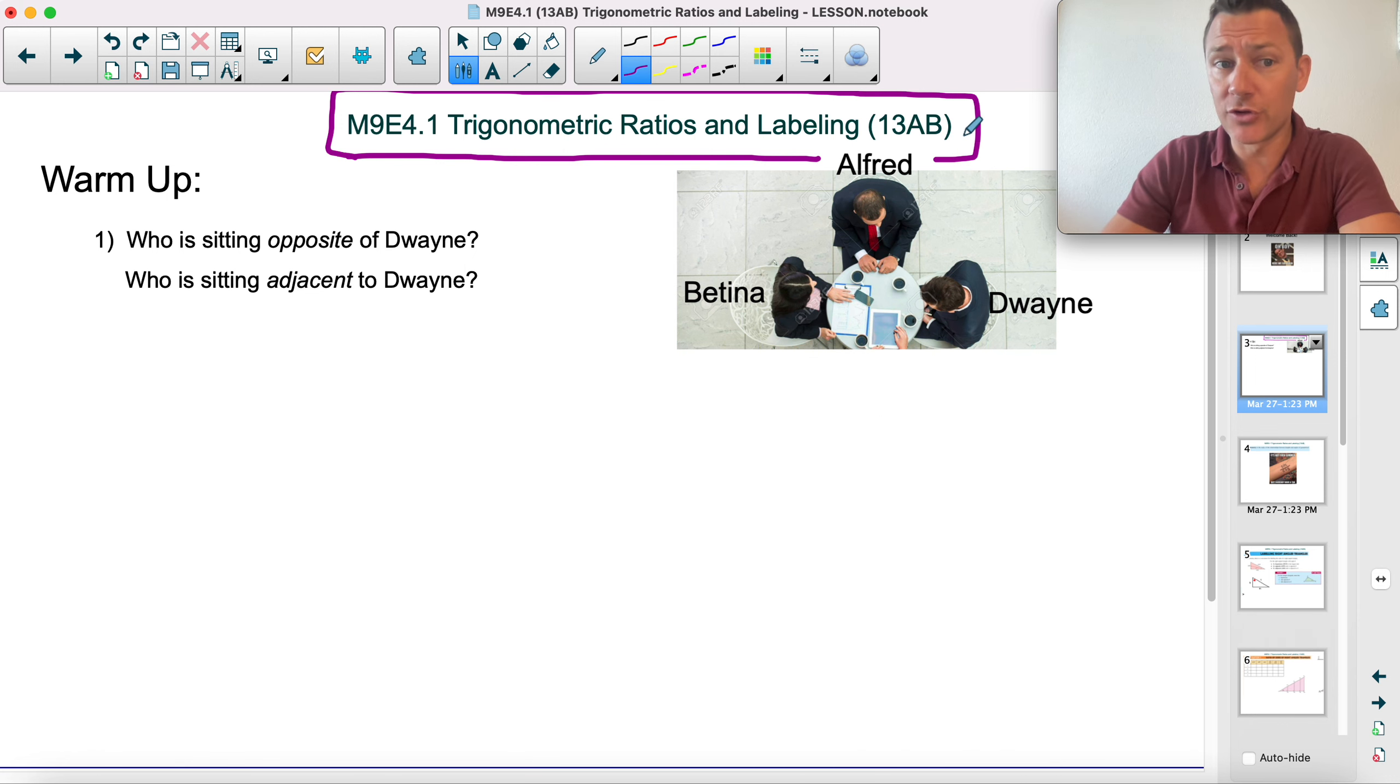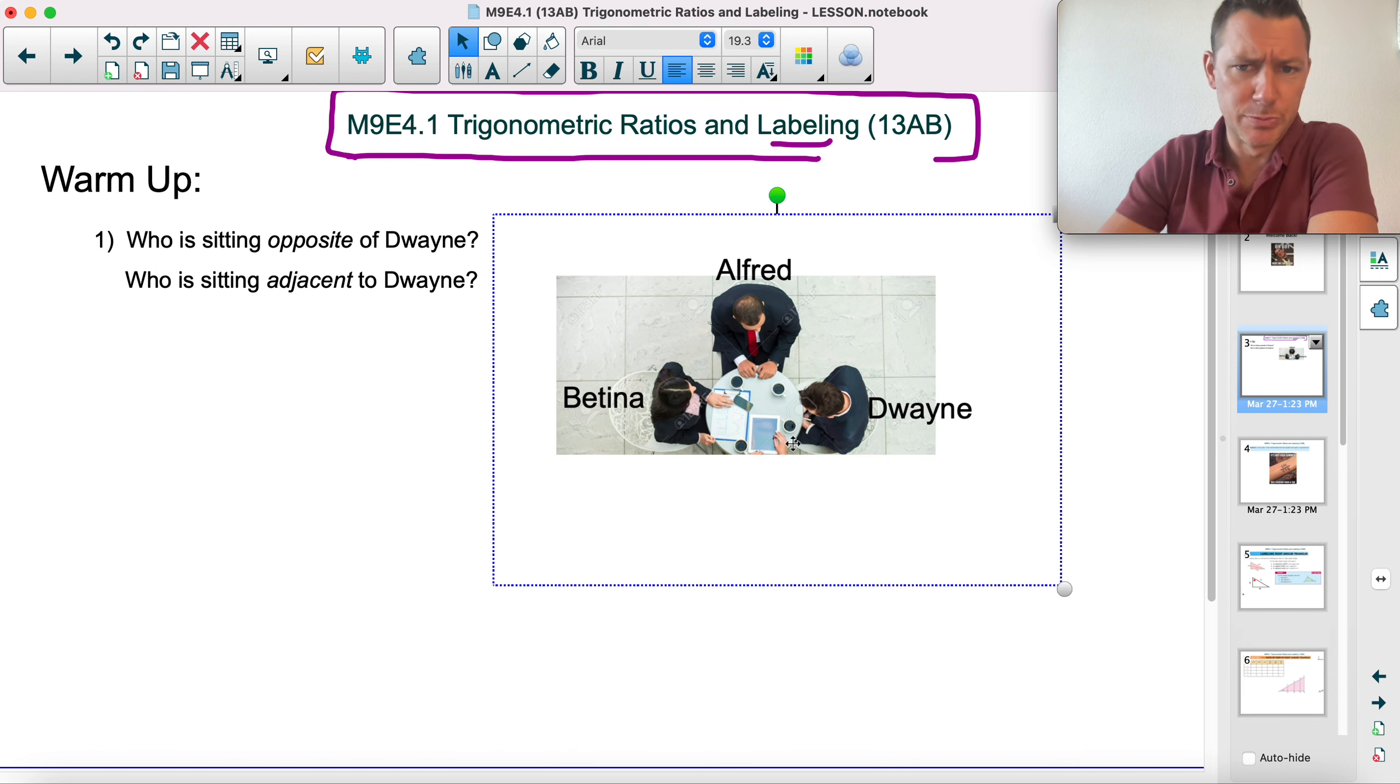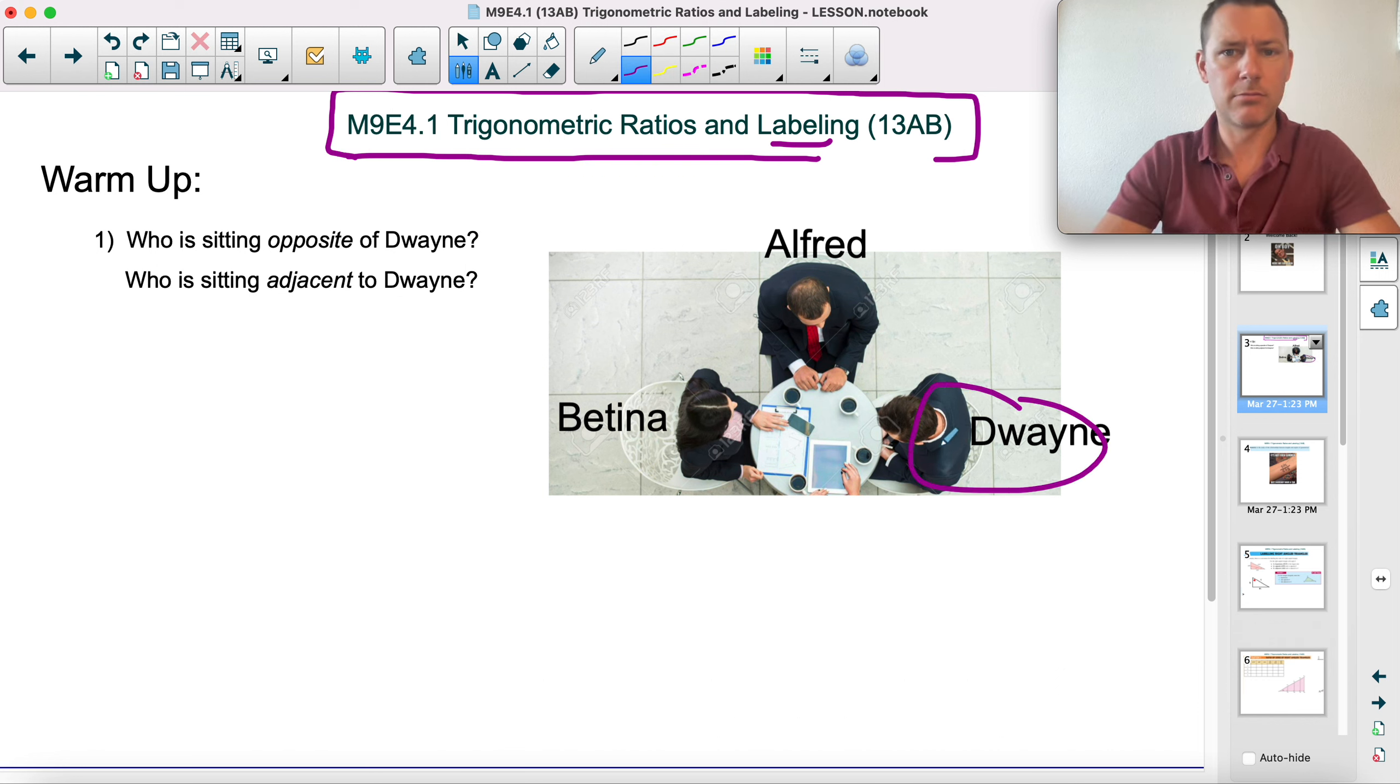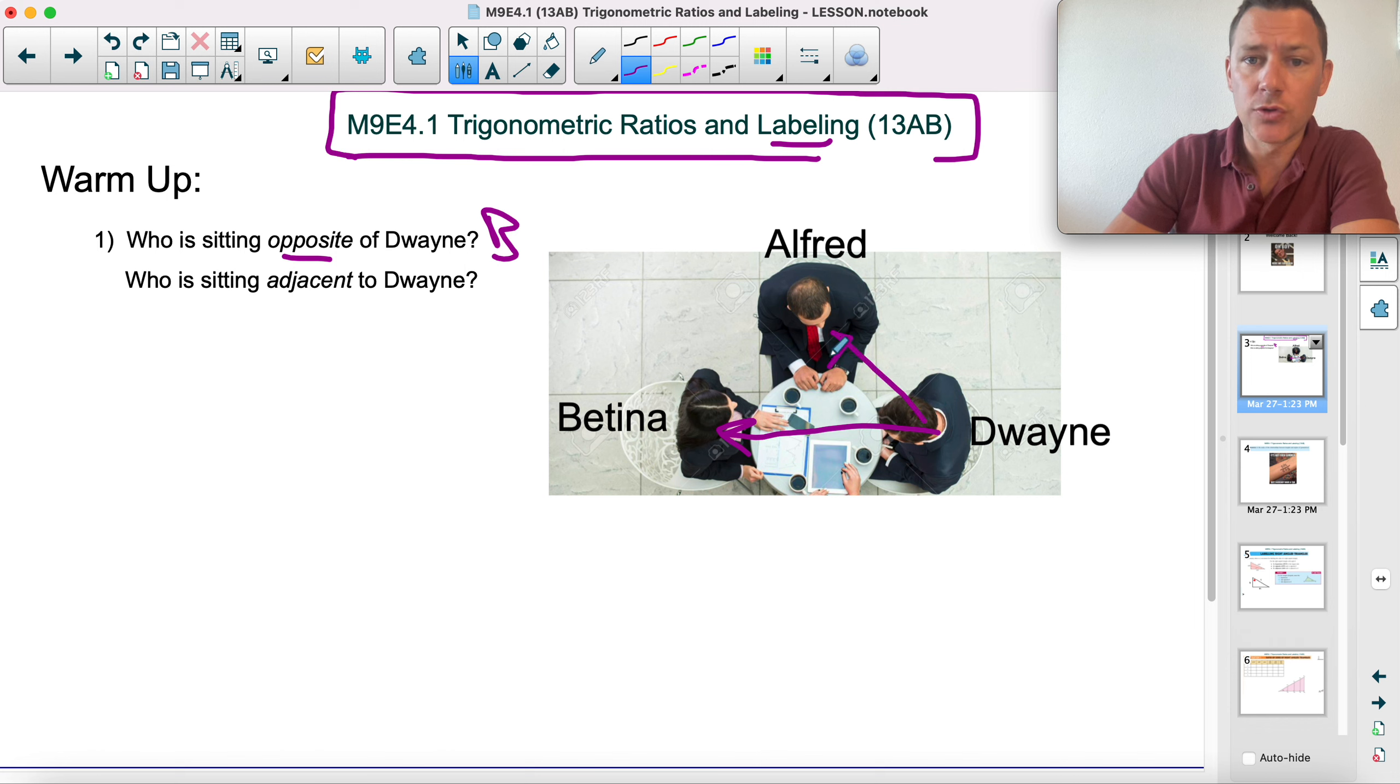Some of you may have seen a little bit of trigonometry already. I think the hardest part is labeling and figuring out which angle you're looking at and then which side name is based on that. So that's what we're messing with today, and we're carrying on despite my absence. So as a little warm-up, here is a business meeting and these three are sitting here hanging out.